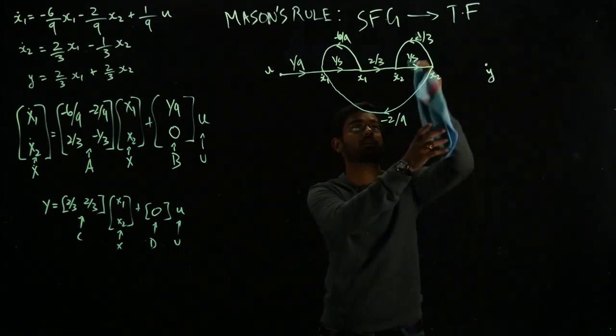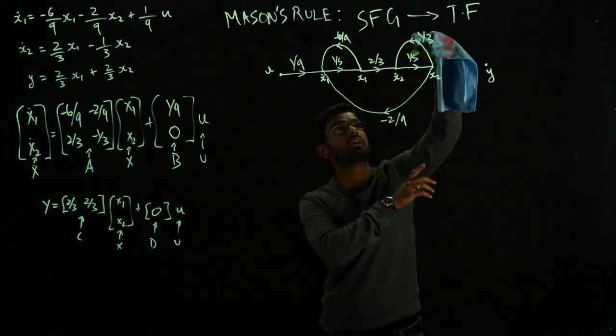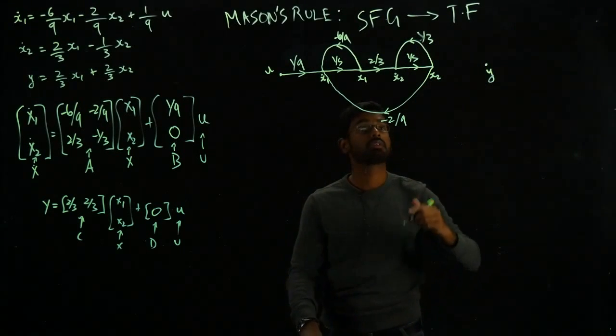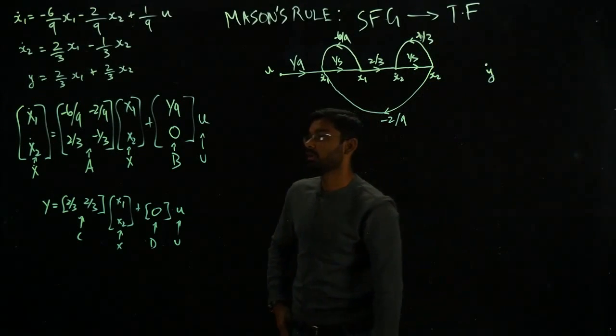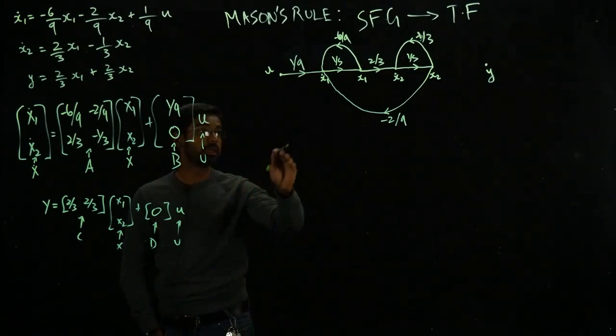I don't have anything from the input so I am done. But what about my output? It has 2 over 3 times x₁, 2 over 3 times x₂.